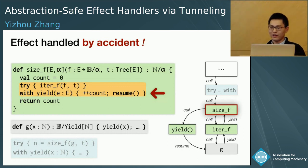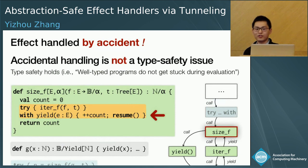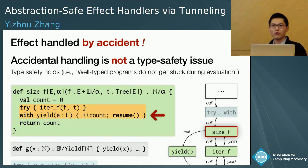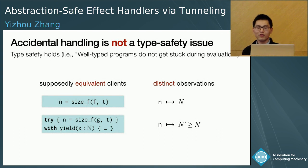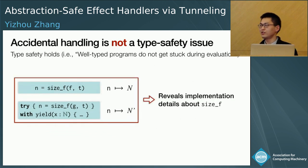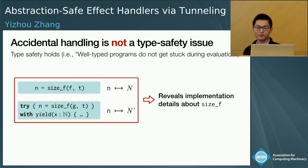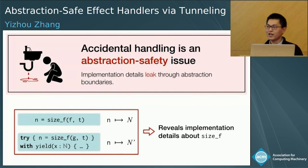This accidental handling behavior is bad. Interestingly, it's not a type safety issue — the program is well-typed and running it does not result in a runtime error. We have two clients of the same abstraction: assuming the value in variable n is the only observable behavior, these two clients ought to be equivalent, since G is simply a wrapper of F. However, we can make different observations about these two programs, revealing implementation details about size_F — specifically, that it does something special internally with the yield effect. This insight shows that accidental handling is really an abstraction safety issue: it causes implementation details to leak through abstraction boundaries. The current operational semantics for algebraic effects is fundamentally broken, and given how fast algebraic effects are gaining popularity, it's imperative that we fix this modularity problem now.